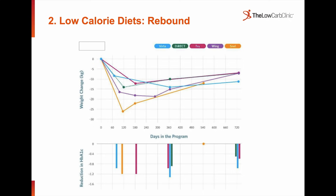This graph shows rebound — the top graph is weight and the bottom bar graph is the HbA1c decrease. It compares low-calorie diets with the low-carbohydrate diets — the Virta and the Tay trials in blue and pink. The yellow low-calorie diet shows quite significant rebound. By about the 18-month mark, all of the improvement in HbA1c was gone, whereas the low-carbohydrate diets had maintained a lot of the improvement.